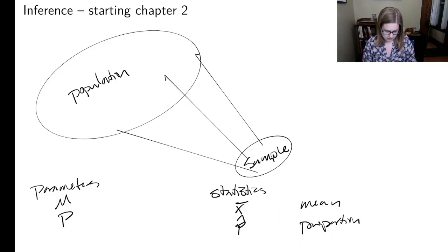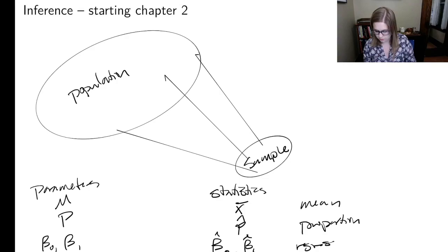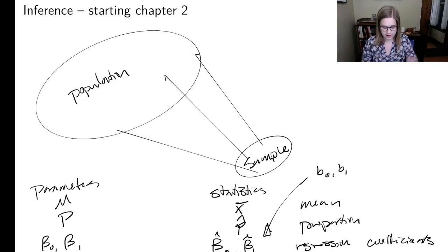And now we're starting to think about parameters like beta zero and beta one, and our statistics beta zero hat and beta one hat. So these are regression coefficients. In an intro stat course, you might have called these b zero and b one, but I use the betas with the hats. So that's just our notation.